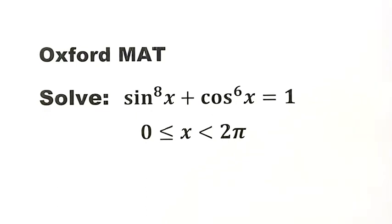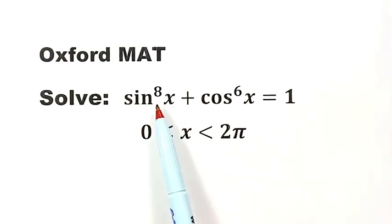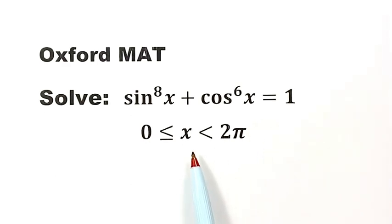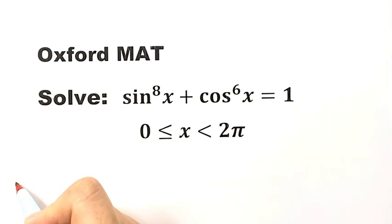In this video we'll be solving a trick equation from Oxford math. The equation is sine x to the power of 8 plus cosine x to the power of 6 equals 1, where x is bigger than or equal to 0 and less than 2 pi. We have to solve this equation in two ways. Let's see the first method.